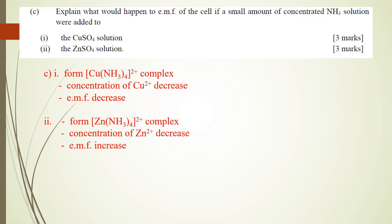You may also be asked to deduce the color of each complex. The [Cu(NH₃)₄]²⁺ complex is deep blue. The [Zn(NH₃)₄]²⁺ complex is colorless because zinc in this complex has an oxidation state of +2, which gives it a completely filled 3d¹⁰ orbital. A complete d orbital results in no d-d transitions, which is why it is colorless.